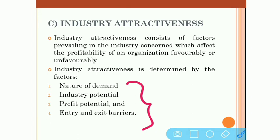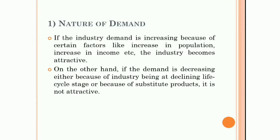We will explain these four factors one by one: nature of demand, industry potential, profit potential, and entry and exit barriers. First is nature of demand. The analysis of demand gives the scope of present and future business. When an organization analyzes the demand of a product, it gives the scope of present and future business. If industry demand is increasing because of factors like increase in population or increase in income, then we can say the industry becomes attractive.